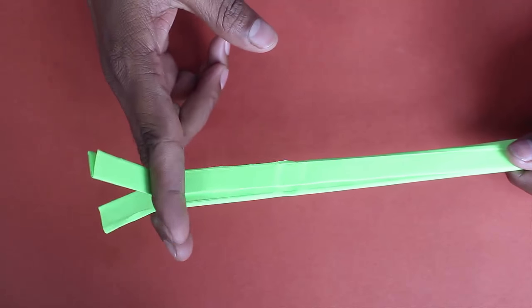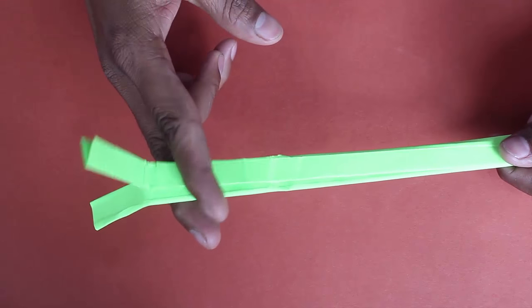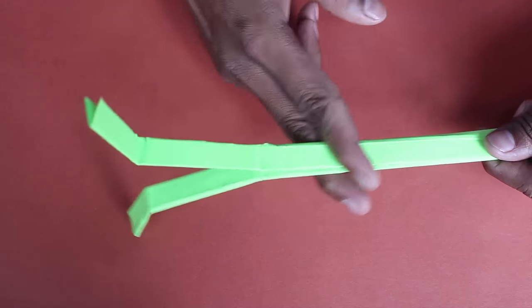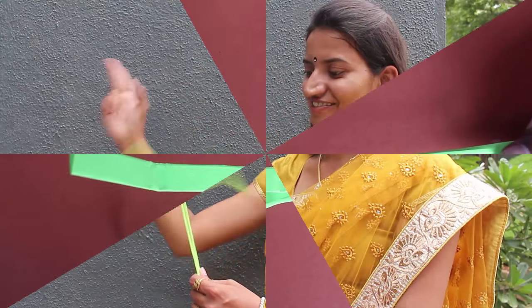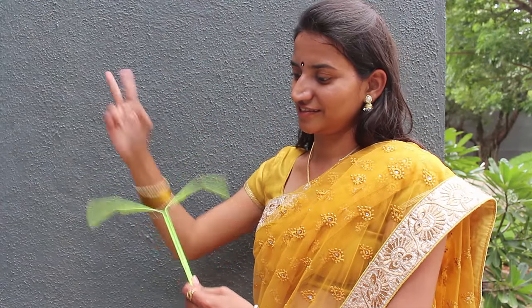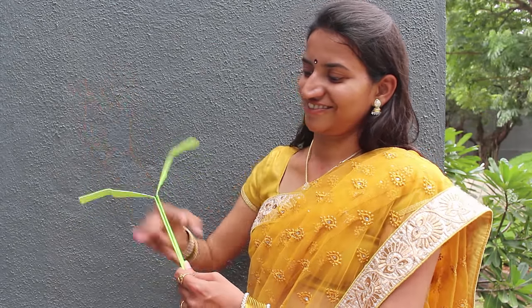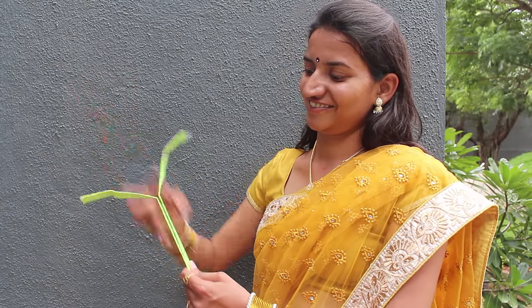Now you just need to hold the clapper between your index and middle fingers and slide up fast. The movable flaps will hit each other and make a most irritating or lovely clapping sound.